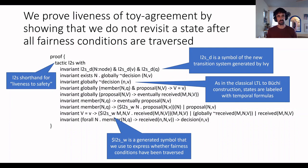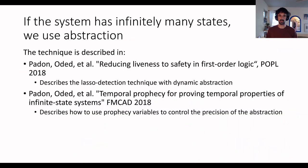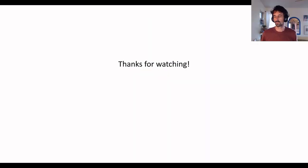In general, the system might not be finite state — and in fact, SCP is not finite state. In this case, we use a form of finite abstraction with techniques described in two papers referenced on the slides. This concludes my talk. I encourage you to read our paper to see the details of how this is applied to the Stellar Consensus Protocol. Thanks for watching.